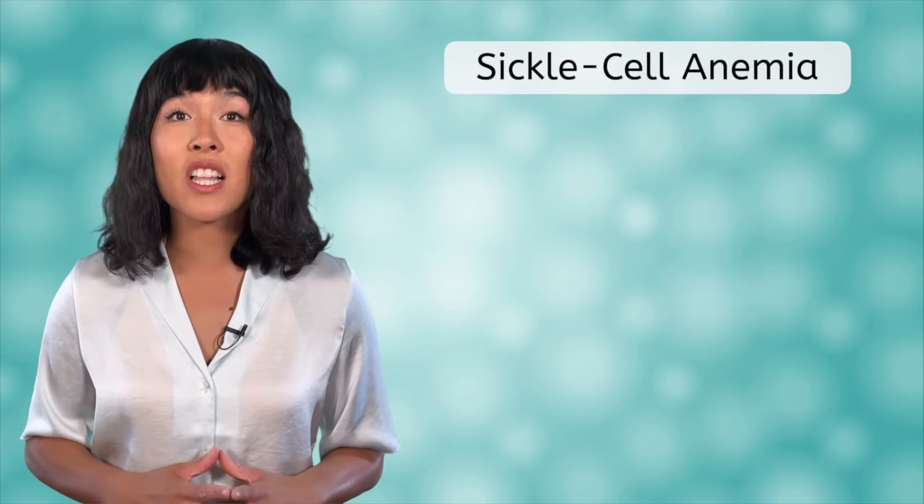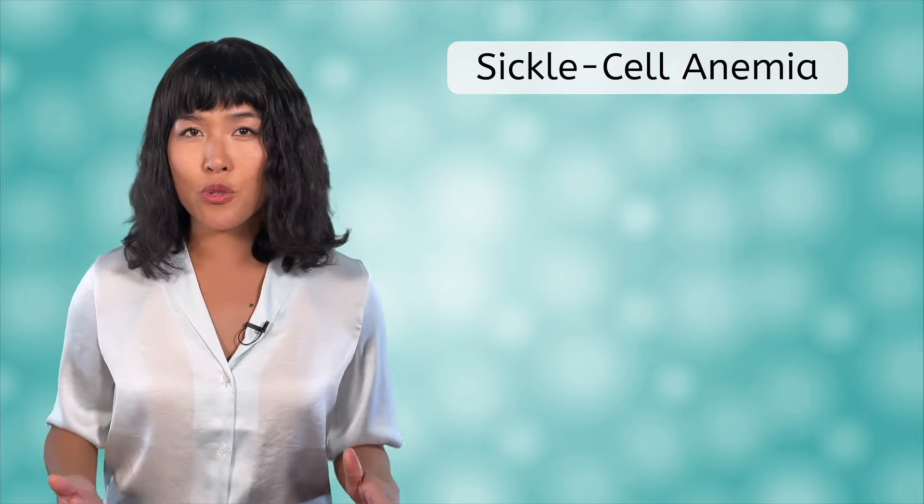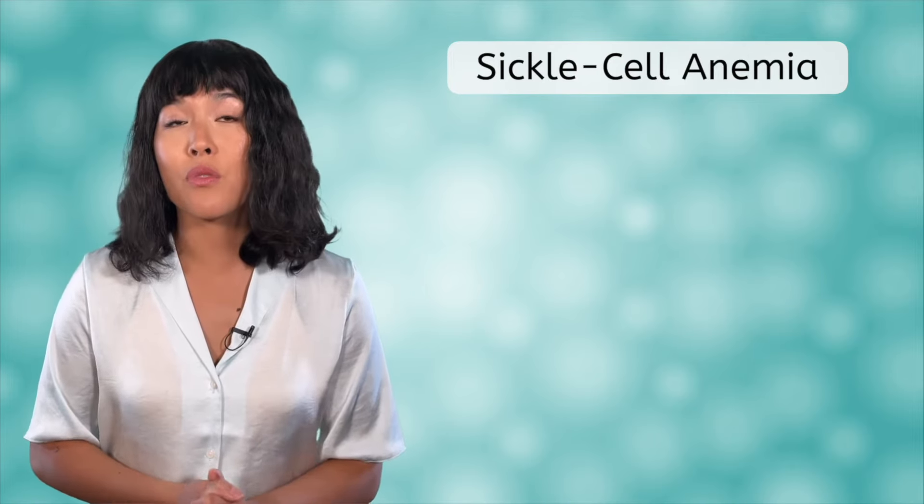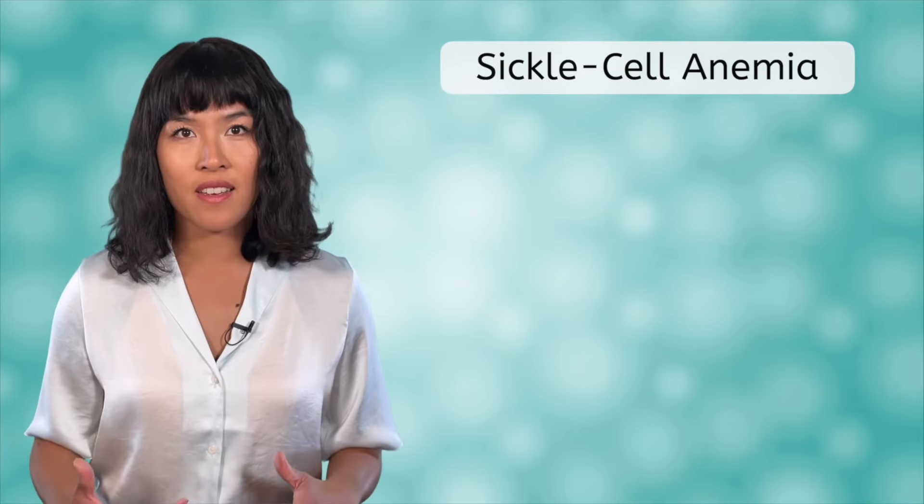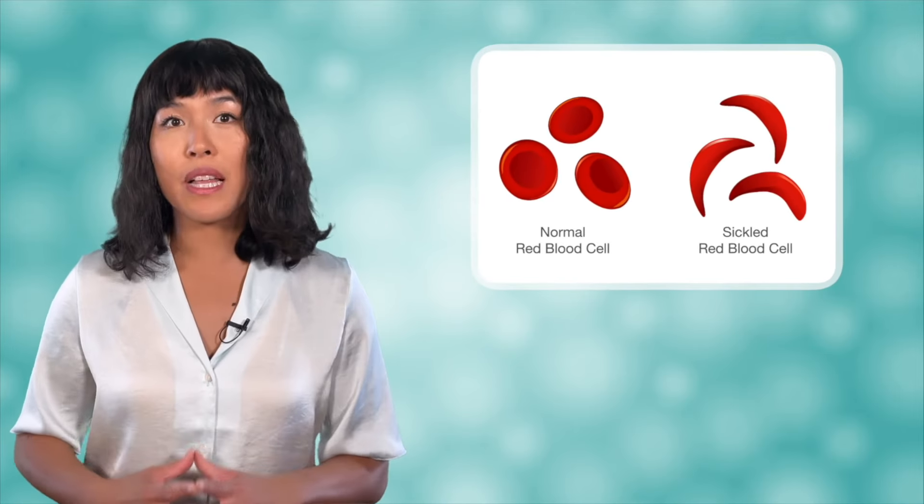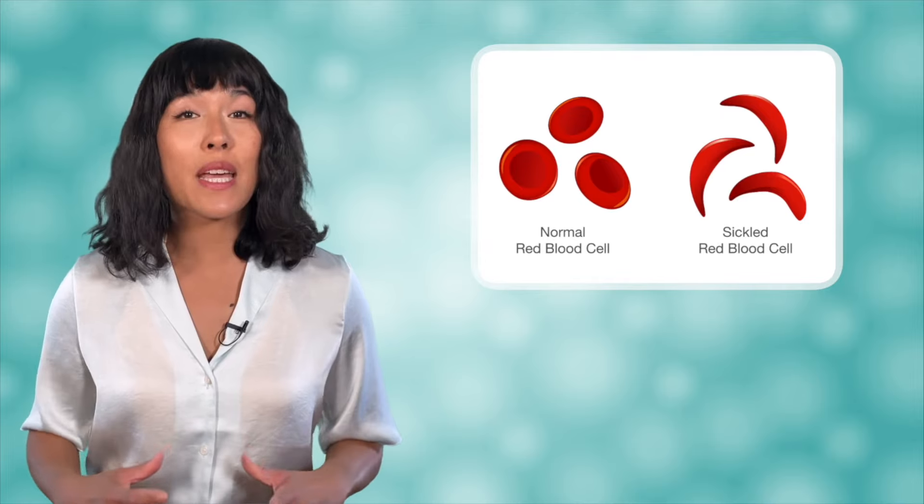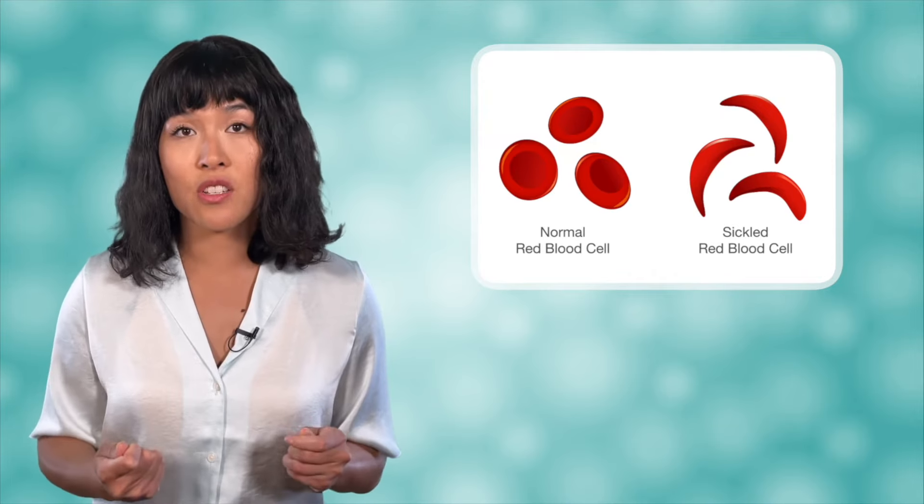Unfortunately, not all inherited mutations have a fun effect like blue color. Another example of a mutation is found in humans called sickle cell anemia. If an individual inherits a sickle cell allele from both parents, their blood cells will not produce enough hemoglobin. This affects the shape of the blood cells and prevents them from being able to carry enough oxygen to the body.